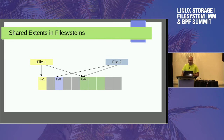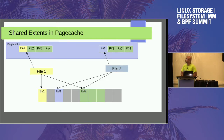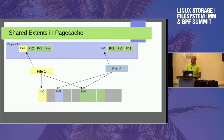In this example, you have file one with two extents, E1 and E2, E2 being three blocks. File two also has E1 and E2, with those three blocks being shared. But when you read it into memory, each file reads it individually, which means you'll have two copies of the second extent for both file one and file two, with pages two, three, and four being read twice.